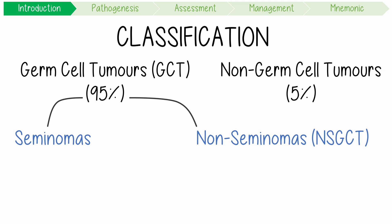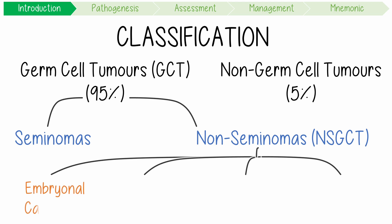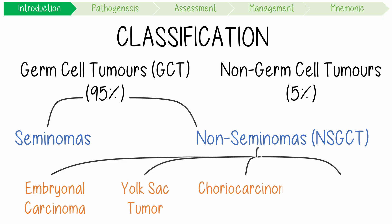Non-seminomatous GCTs include embryonal carcinoma, yolk sac tumours, and choriocarcinomas, along with teratomas.